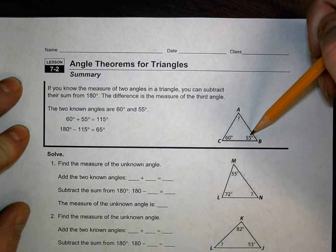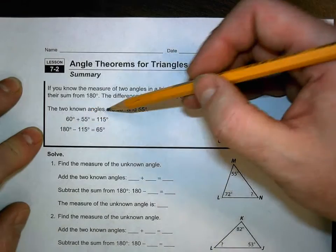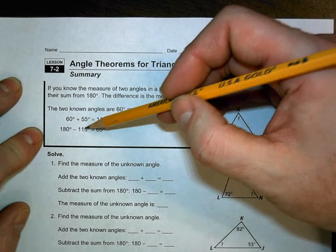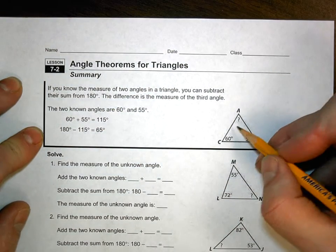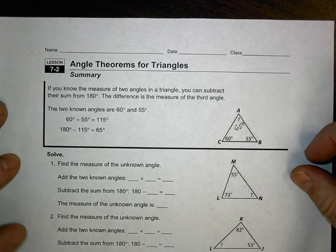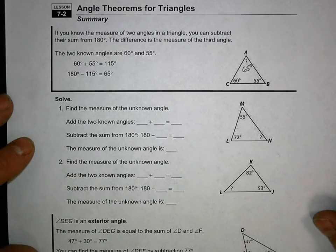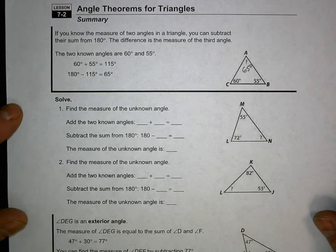So the two angles in this one are 60 and 55, which says if I take 180 and I minus whatever they add to, which is 115, I get 65 degrees, and that would be my last angle. So let's use that triangle sum theorem a couple times here to find some answers.